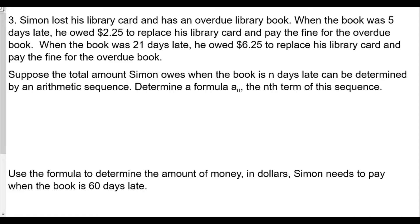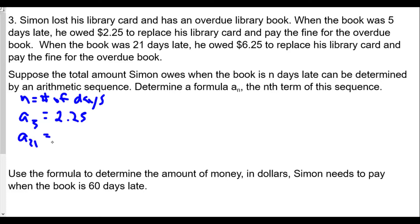So that's the first thing we're going to do. We know that n is the number of days, so a of five equals $2.25 and a of 21 equals $6.25. To find the nth term, we're definitely going to be using our formula a sub n equals a1 plus n minus 1 times d. We can use this formula to figure out what the a1 and d values are so we can determine the general formula.